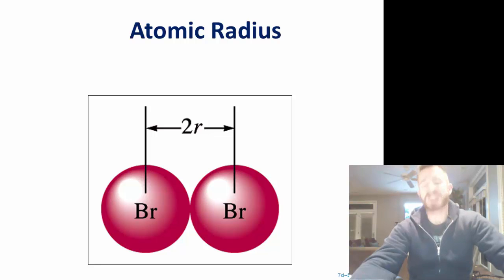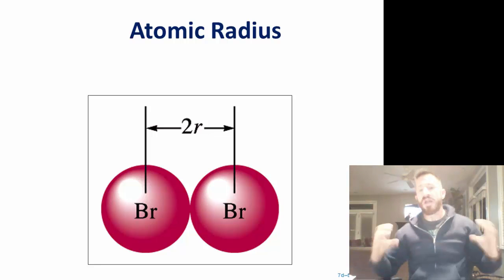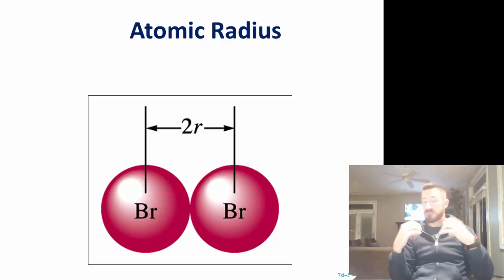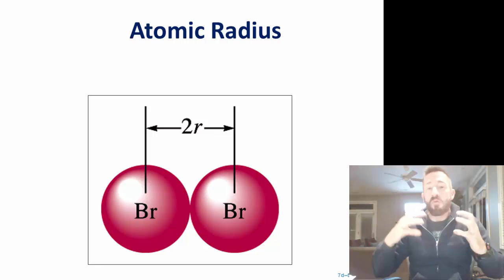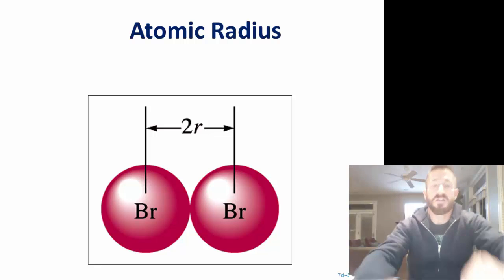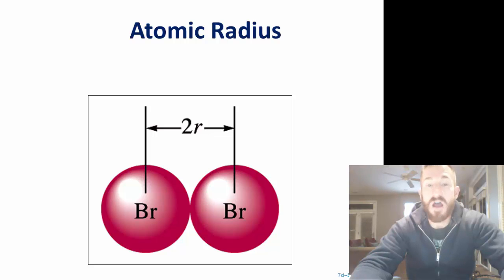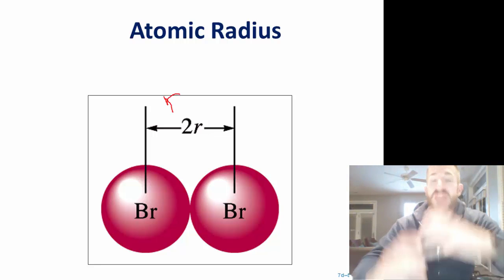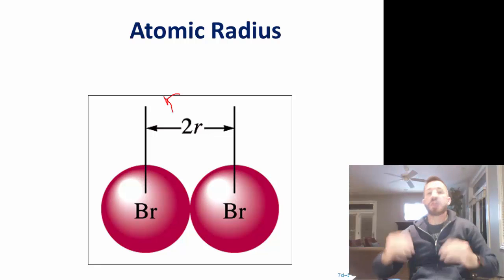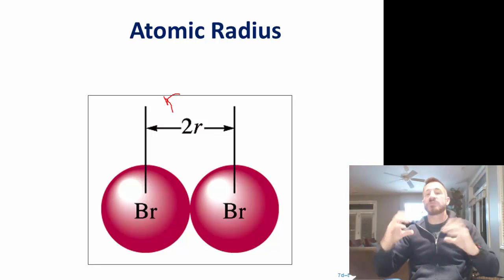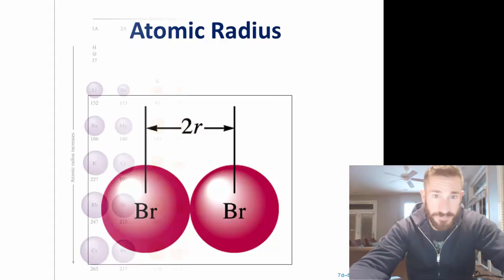Now let's talk about the first property: atomic radius, which gives us an idea of size. How do they determine atomic radius? Anytime two atoms are put next to each other — whether bonded or not — they look at the distance from the center of one atom to the center of the other, which is a diameter, and divide that by two to get the radius. This is done because the edge of an atom is ambiguous since it's an electron cloud that can change.